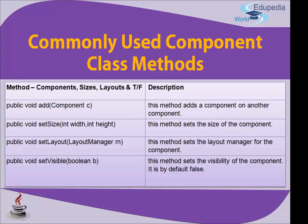The next method is public void setLayout(LayoutManager m), where m is the layout manager parameter. This method sets the layout manager for the component. Then the last one is public void setVisible(boolean b). The state will be either true or false — if you want to display the form or button, set the boolean value to true; this method sets the visibility of the component.